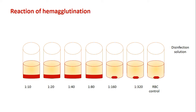Red cells which are not agglutinated settle at the bottom in the form of a button, while agglutinated cells spread into a shield-like pattern. In Russian literature, this is referred to as an umbrella shape. The non-agglutinated result is called the button shape.